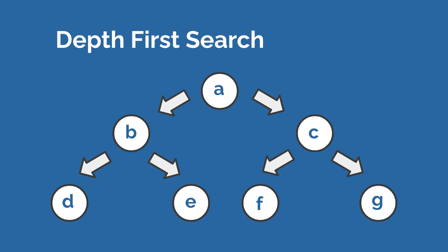Trees are very often asked about at the coding interview because many companies implement trees in their structure — trees are used for recommendations. For example, if a tree always had all the numbers bigger than the root on the right and all the numbers less than the root on the left, you know that if you're looking for a certain number, you should go either left or right. That's just one example of an efficient tree. Graphs are very similar to a tree, but let's focus on the tree for now.